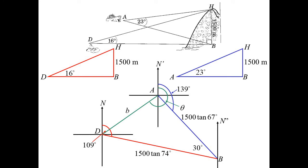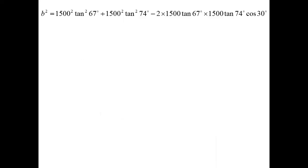All right. Well, I think we've got enough there. We can use the cosine rule on that triangle now and work out what B is. So B squared is 1,500 squared tan squared 67 plus 1,500 squared tan squared 74 minus 2 times 1,500 tan 67 times 1,500 tan 74 cos 30. Wow. A bit of calculator work, but there we go. We get it to the nearest metre, 2,799 metres.